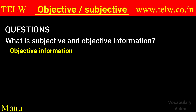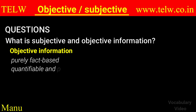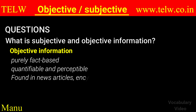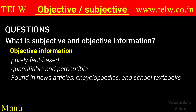Objective information, on the other hand, is purely fact-based. It is quantifiable and perceptible. Objective information is usually found in news articles, encyclopedias, and school textbooks.